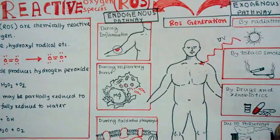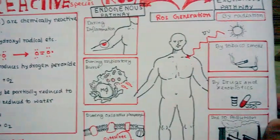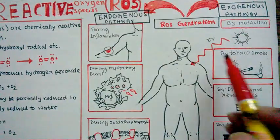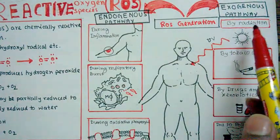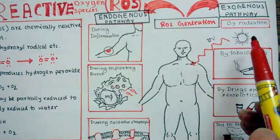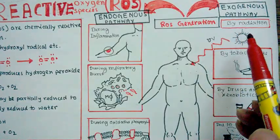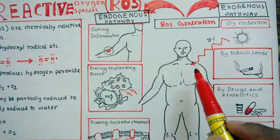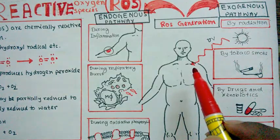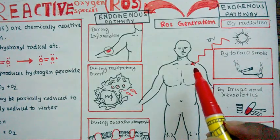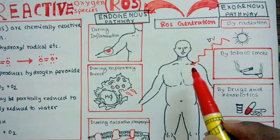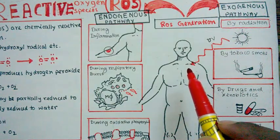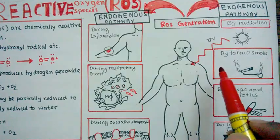So basically we have seen there are mainly three types of ways how endogenous ROS could be generated. Let's see the exogenous pathway. In the exogenous pathway, ionizing radiation such as UV radiation can damage our body and can produce a lot of ROS.